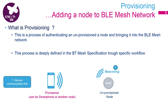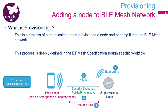The provisioner sends an invitation and establishes a secure link based on public and private keys. Once the secure link is established, the provisioner pushes important data to the unprovisioned node: a network key, an application key, a device key, and a device address. All these keys are used to secure communication over the mesh network, and security is a key part of every BLE mesh network.